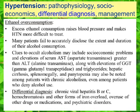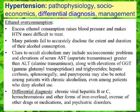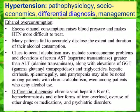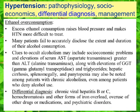Ethanol overconsumption, or alcoholism, raises blood pressure and makes hypertension more difficult to treat. Many patients fail to accurately disclose the extent and duration of their alcohol consumption. Clues to occult alcoholism include socioeconomic problems — difficulty maintaining friendships, relationships, and income — elevations of AST greater than ALT, along with elevations of GGT and alkaline phosphatase, and classically elevated triglycerides. In later stages we see hepatic cirrhosis, splenomegaly, and pancytopenia — even in patients who deny alcohol intake.